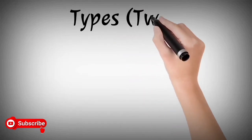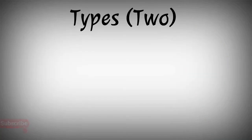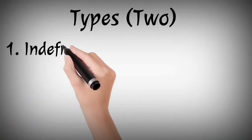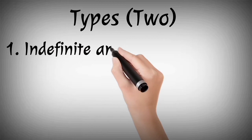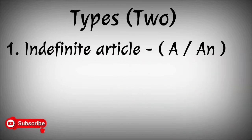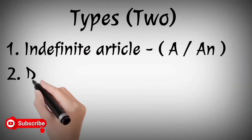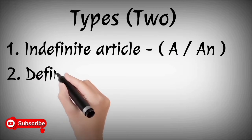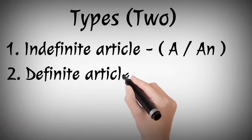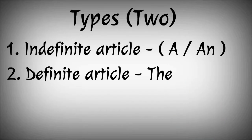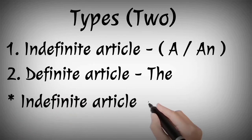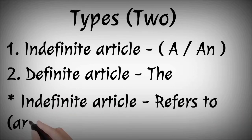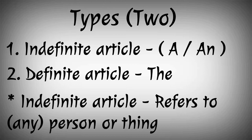There are two types of articles. One is Indefinite Articles, and the other one is Definite Articles. In Indefinite Articles, what is an Indefinite Article? It refers to any person or a thing.